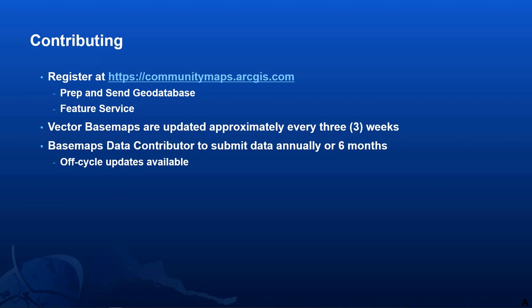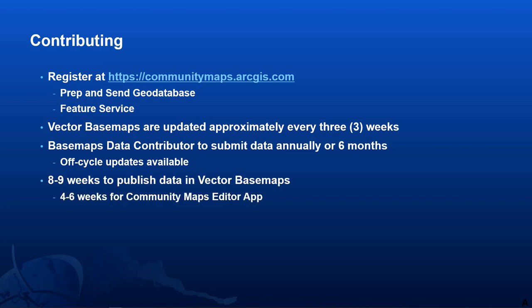If you have important developments, you can submit these as off-cycle. Our contribution process normally takes about eight to nine weeks on average to publish a new contribution into the vector base maps. The Editor app updates are a little quicker, and new features are live in the base maps around four to six weeks after they're created. Lastly, the world geocoding service in ArcGIS is updated every three months with new address contributions.